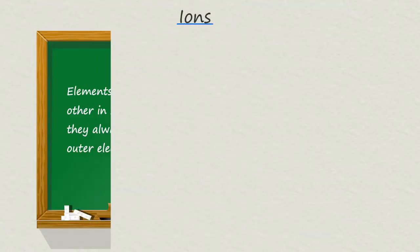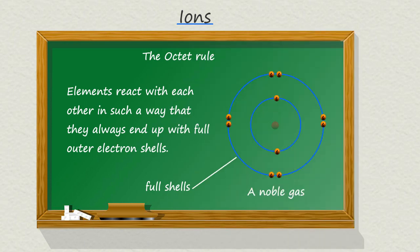Elements only react if they can end up with full outer electron shells or energy levels — that is, the same electron arrangement as a noble gas in group zero of the periodic table.